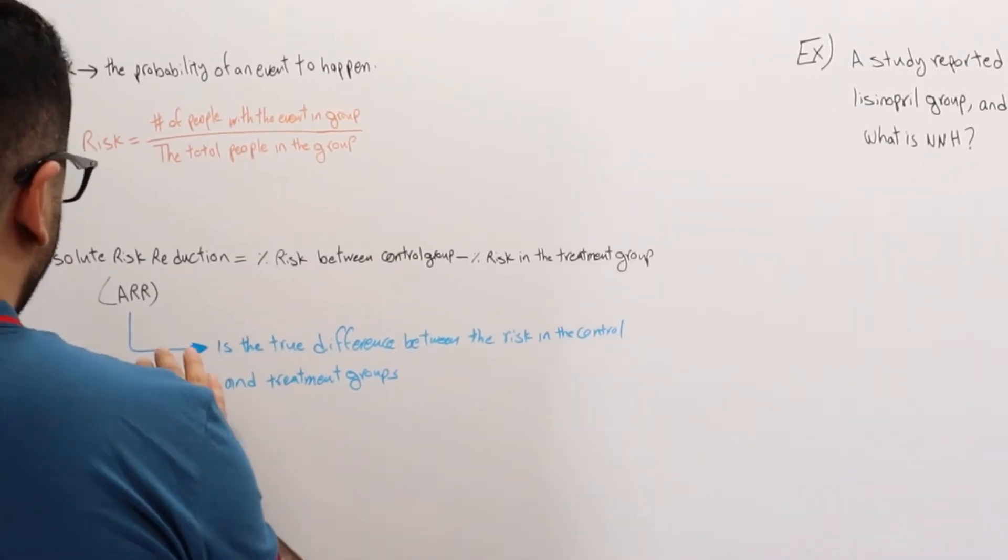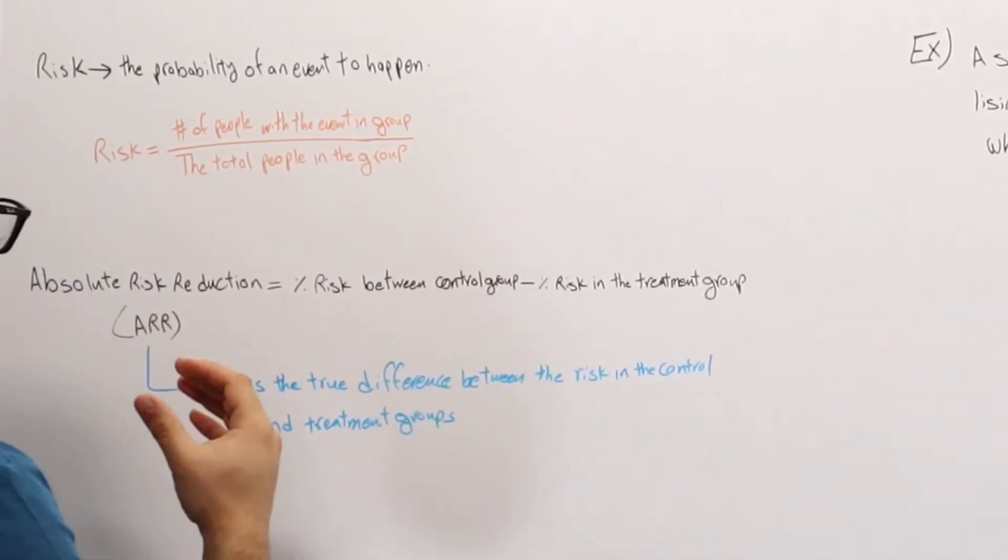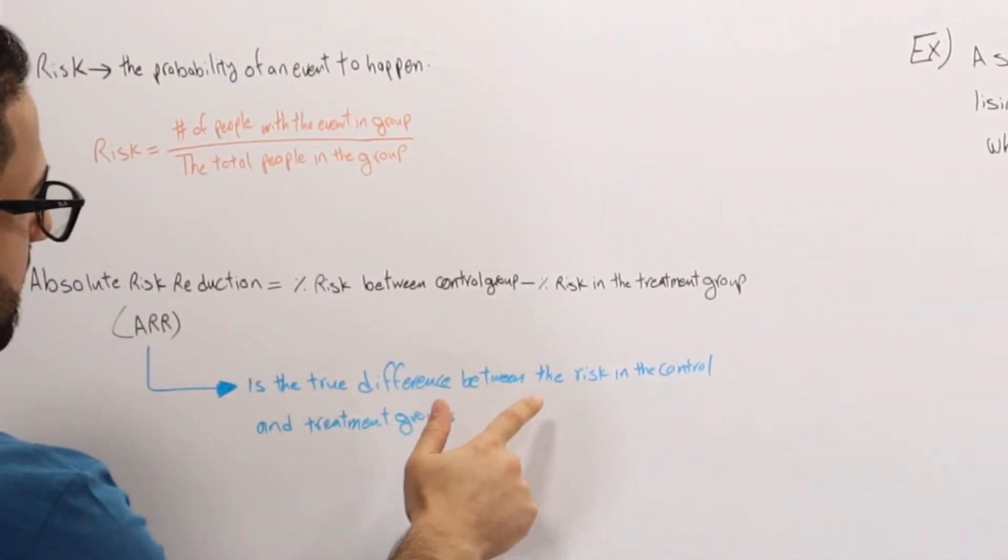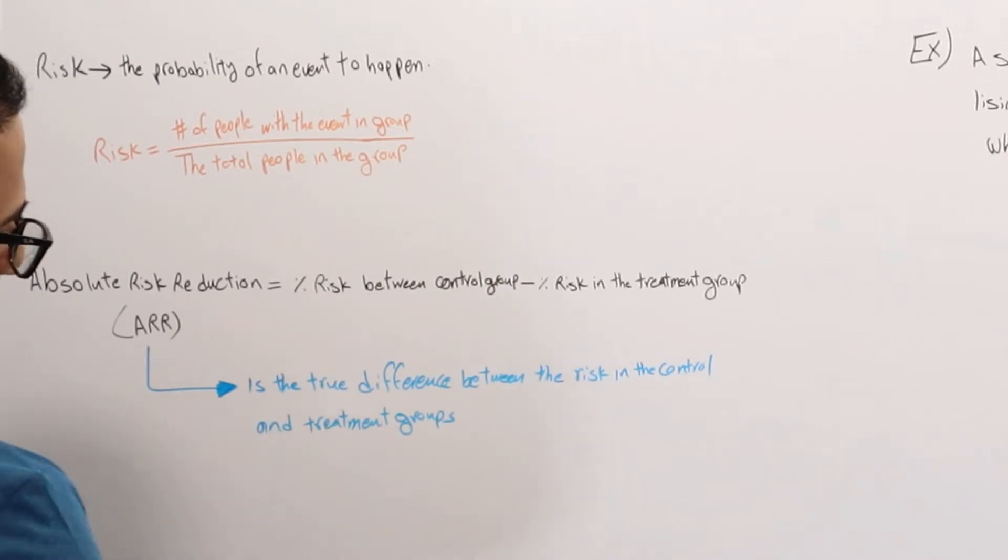Going back, absolute risk reduction is simply the true difference between the risk in the control and the treatment groups.